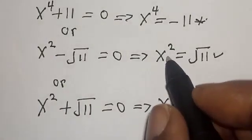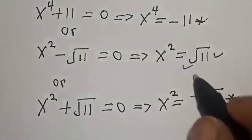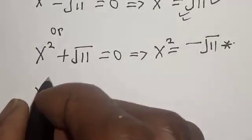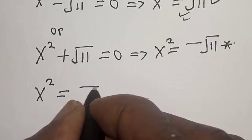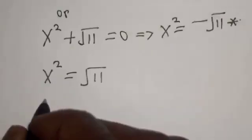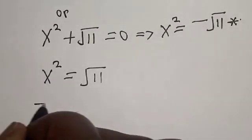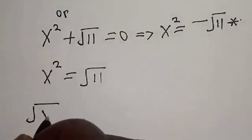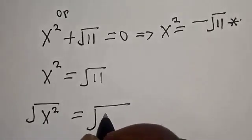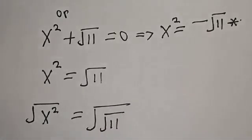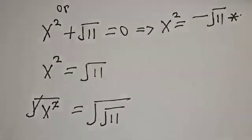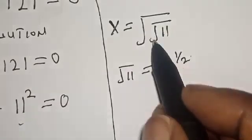The only valid solution is x squared equals the square root of 11. Since we are looking for the value of x, let's take the square root of both sides. The square root of x squared equals the square root of the square root of 11. The left side simplifies to x, so x equals the square root of the square root of 11.